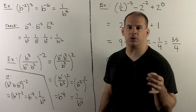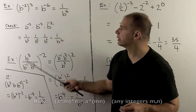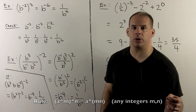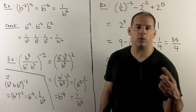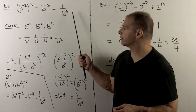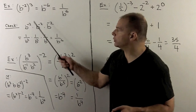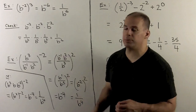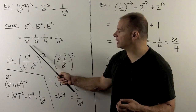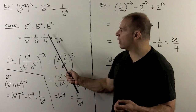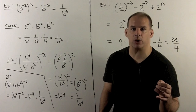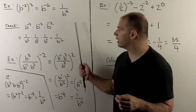Let's use the rule for when we have something raised to an exponent, itself raised to another exponent. I take b to the minus 2, raised to the third power. The rule says we multiply the exponents, so we get b to the minus 6. To write this with all positive exponents, we write 1 over b to the sixth. Checking the long way: b to the minus 2 multiplied by itself three times — each is 1 over b squared — so multiplying gives 1 in the numerator and b to the sixth in the denominator.